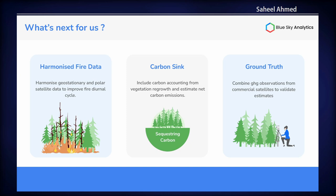So what's next for us? In order to improve fire coverage, we are harmonizing polar and geostationary satellites so that we can take advantage of both: the high-resolution coverage of polar satellites and the 24-hour coverage of geostationary, to improve the fire diurnal cycle approach. We are working on introducing carbon sink, which is the amount of carbon being taken out from the atmosphere when vegetation regrows, since the UN expects countries to report their emissions in net and not gross. Ground truth is another area of concern — we are trying to approach commercial partners to find high-resolution greenhouse gas data so that we can compare our estimates with that.